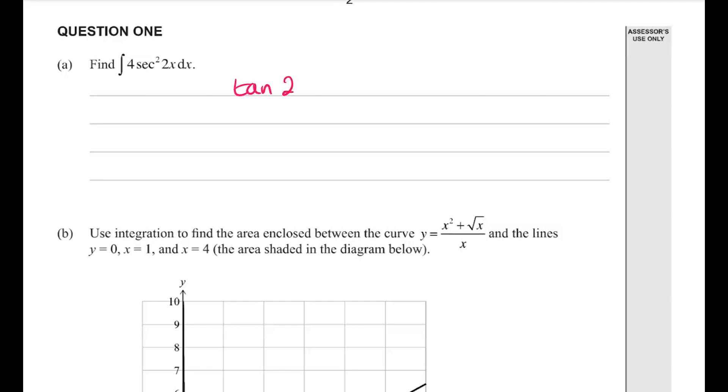So this becomes tan 2x from the sec. And then we need to do 4 divided by the derivative of what was inside there. So 4 divided by 2 gives us 2 tan 2x plus c.